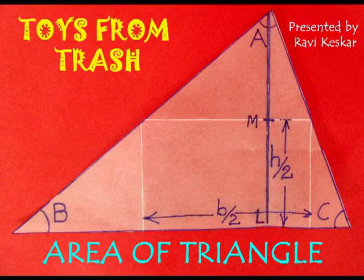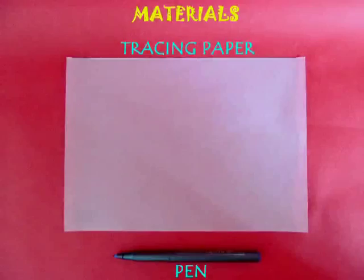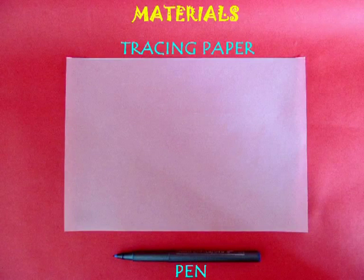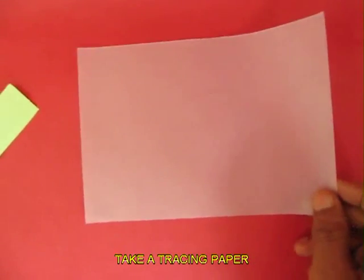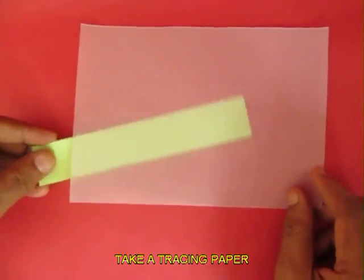In this activity we will try and find the area of a triangle. For this you need a tracing paper and a pen. A tracing paper is almost translucent, so if you put a yellow sheet behind it you can actually see it like a plain glass.